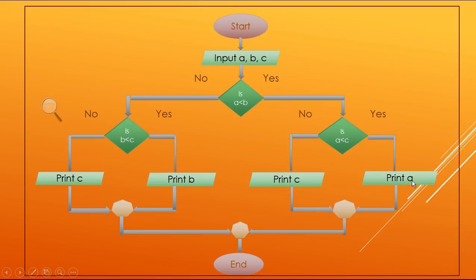Otherwise, c will be displayed as the smallest and the program terminates. If the first condition a is less than b is false, control shifts to the else part of the outer if statement. Here the condition b is less than c is evaluated. If it is true, the value b is printed and the program terminates. Otherwise, c is printed and the program terminates. That is the flowchart of the above program.